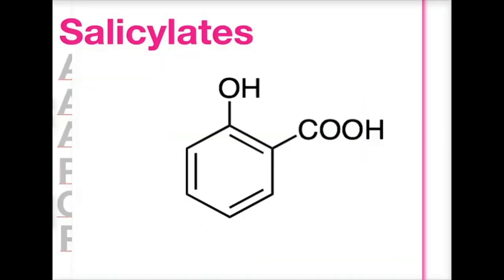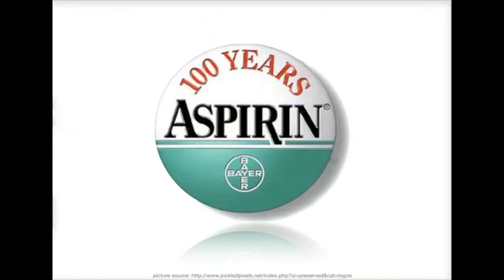The first group we're going to look at is salicylates. Salicylates are made up of a phenol group — that OH group — also attached to the carboxyl acid. One of the best examples of salicylates is aspirin. It's been around for more than 100 years and has been used for the treatment of mild to moderate pain and fever, and more recently over the past 10 to 15 years, as an anticoagulant to reduce the chances of people getting a heart attack.